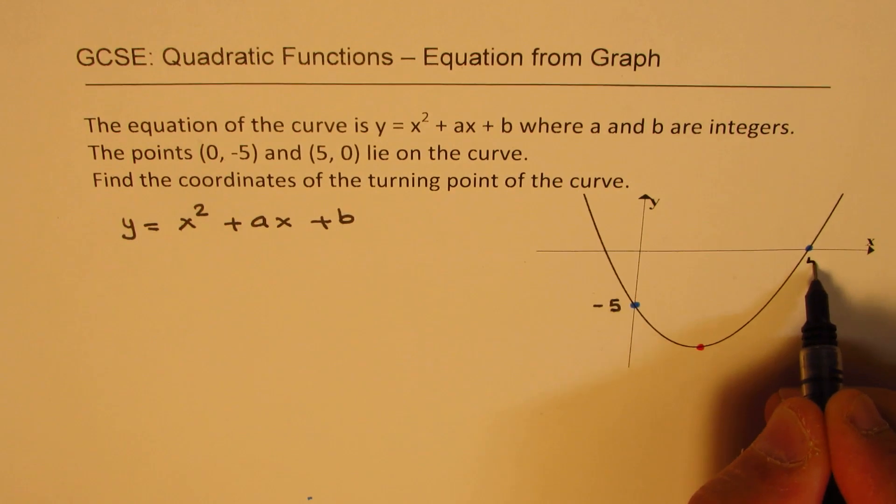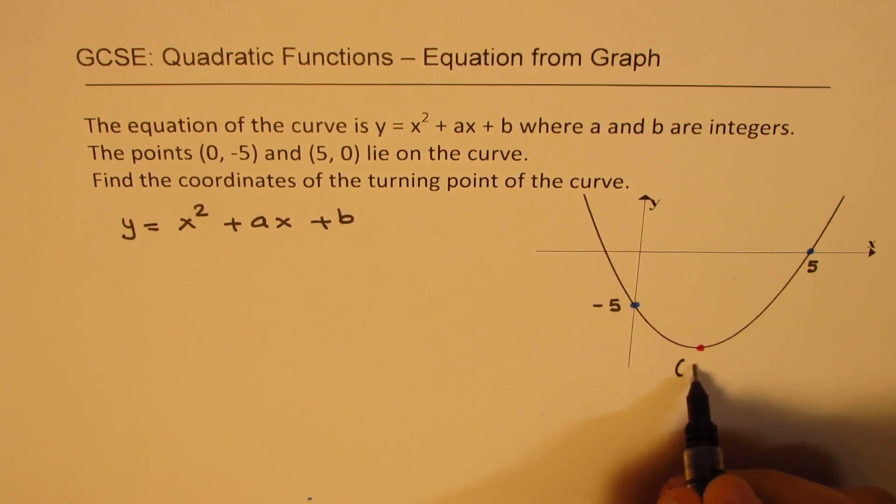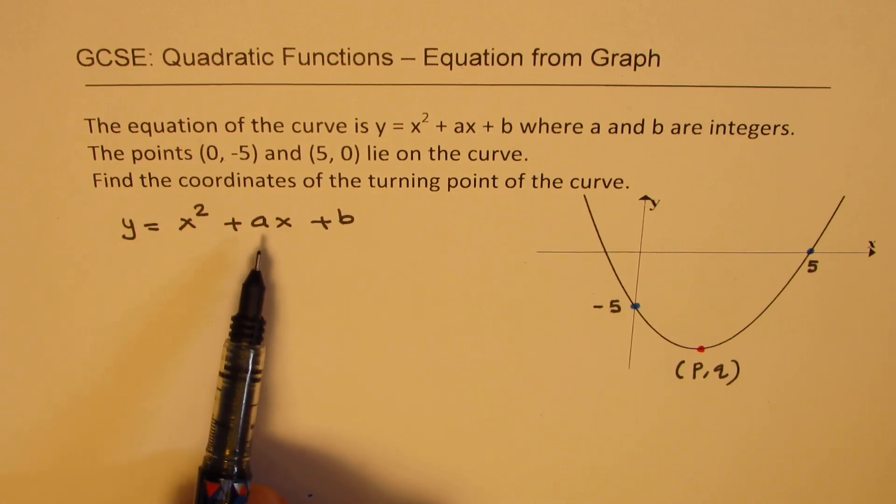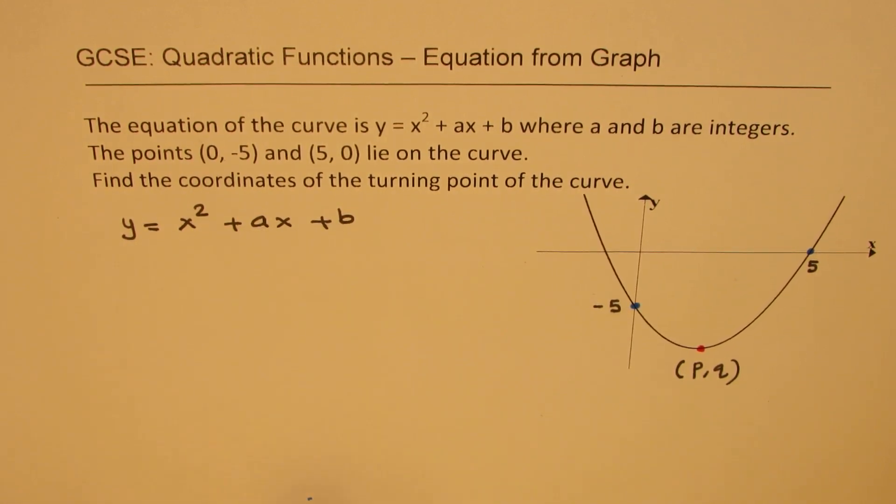So this is -5, that is 5, and we'll find this turning point. Let this turning point be, let's say, (p, q). So let us first find what a and b are.